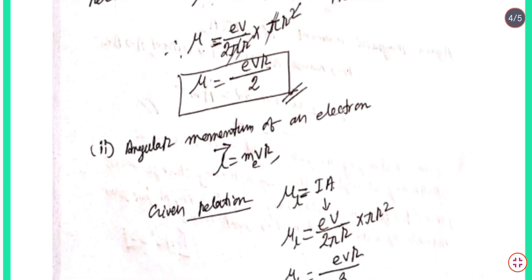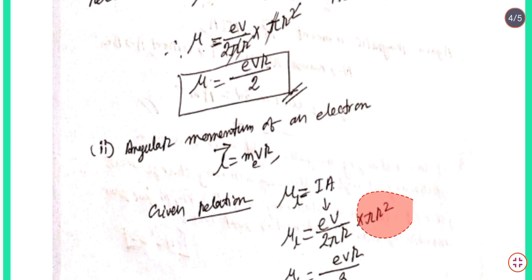From μ = i × A, with i = ev/(2πr) and area = πr², substituting and simplifying: μ = evr/2. Then since L = mvr, we get μ_L = eL/(2mₑ). This completes the derivation.